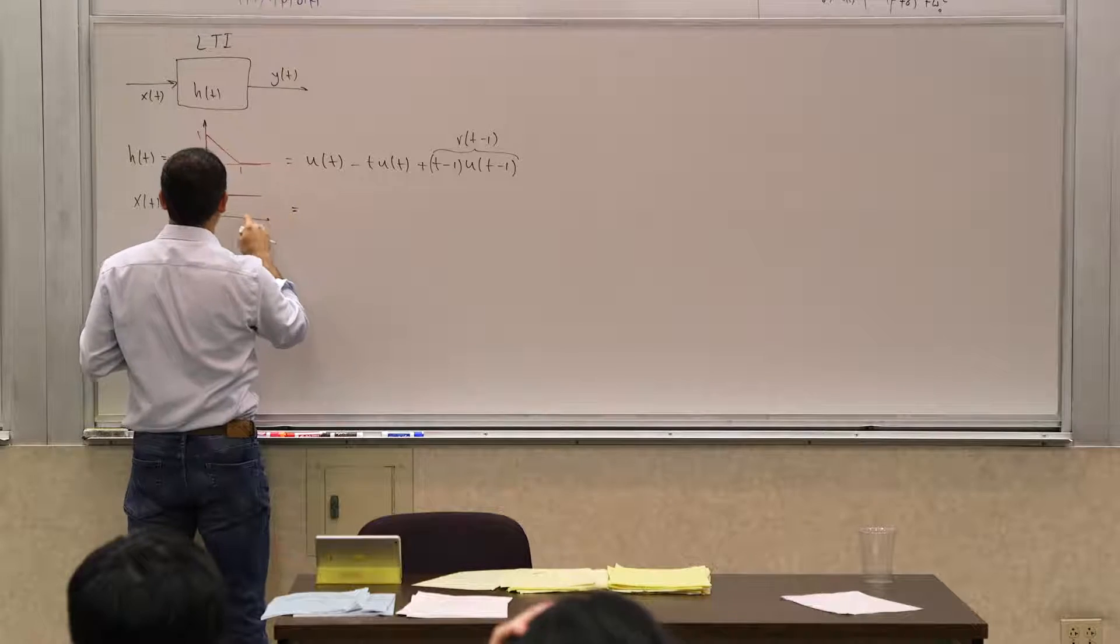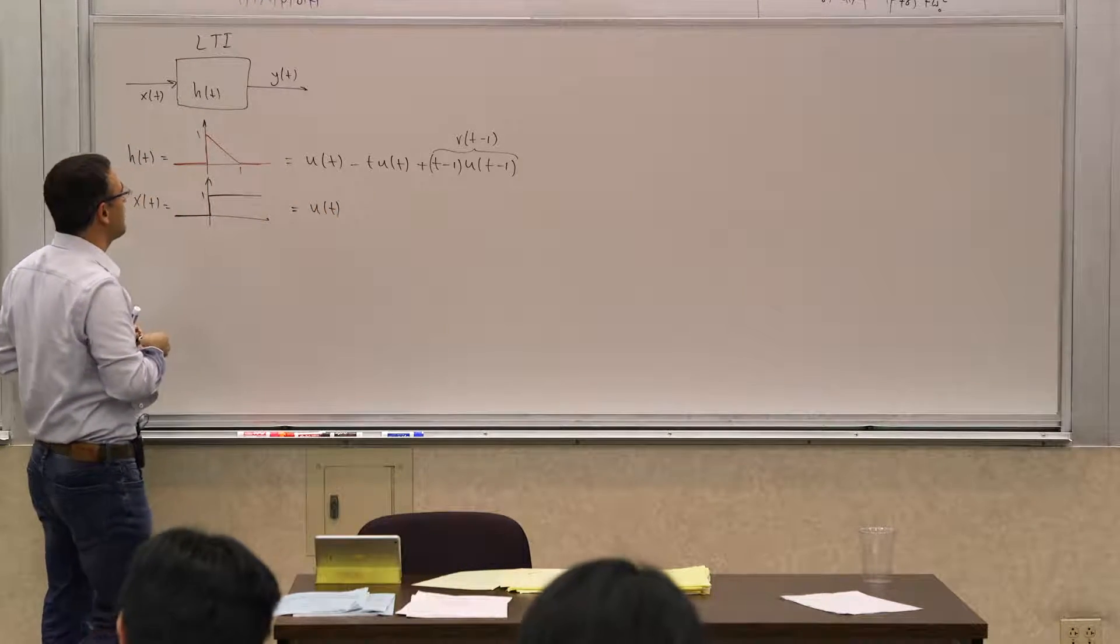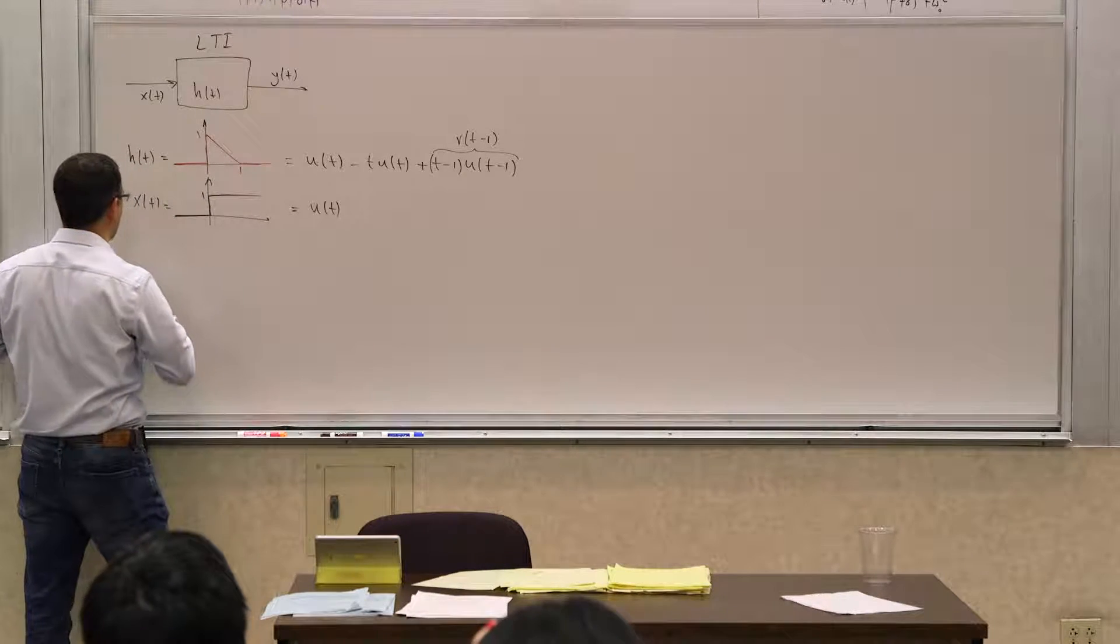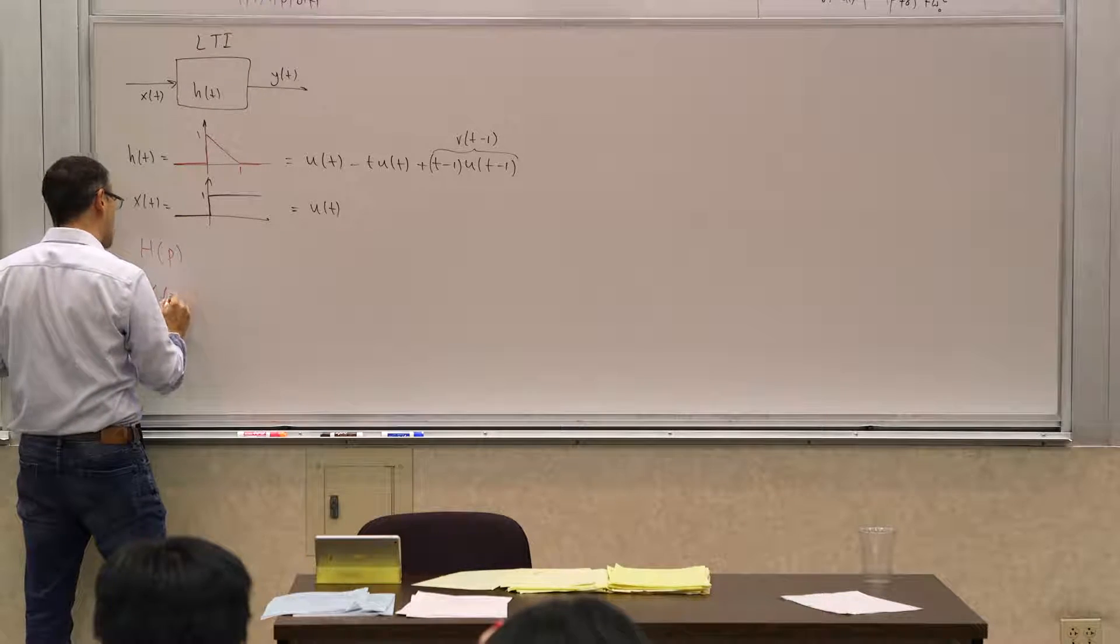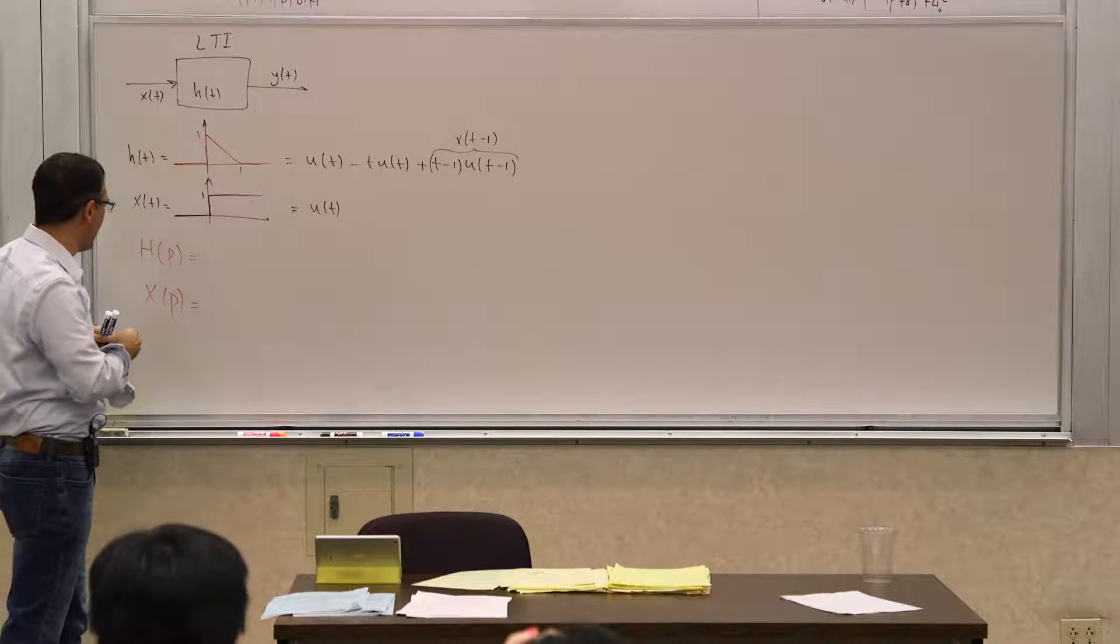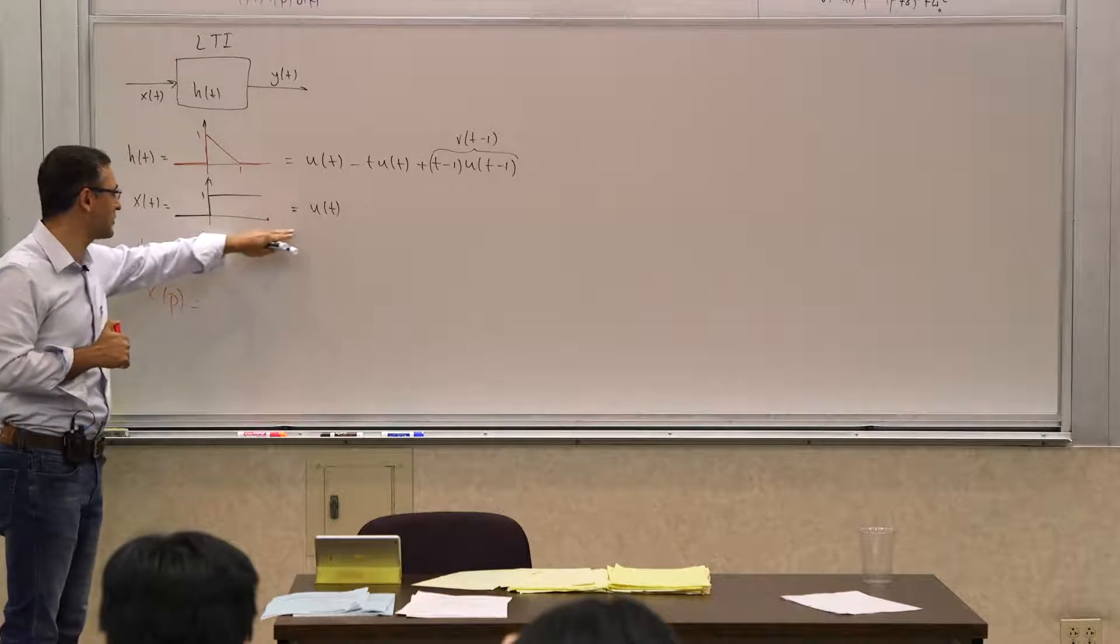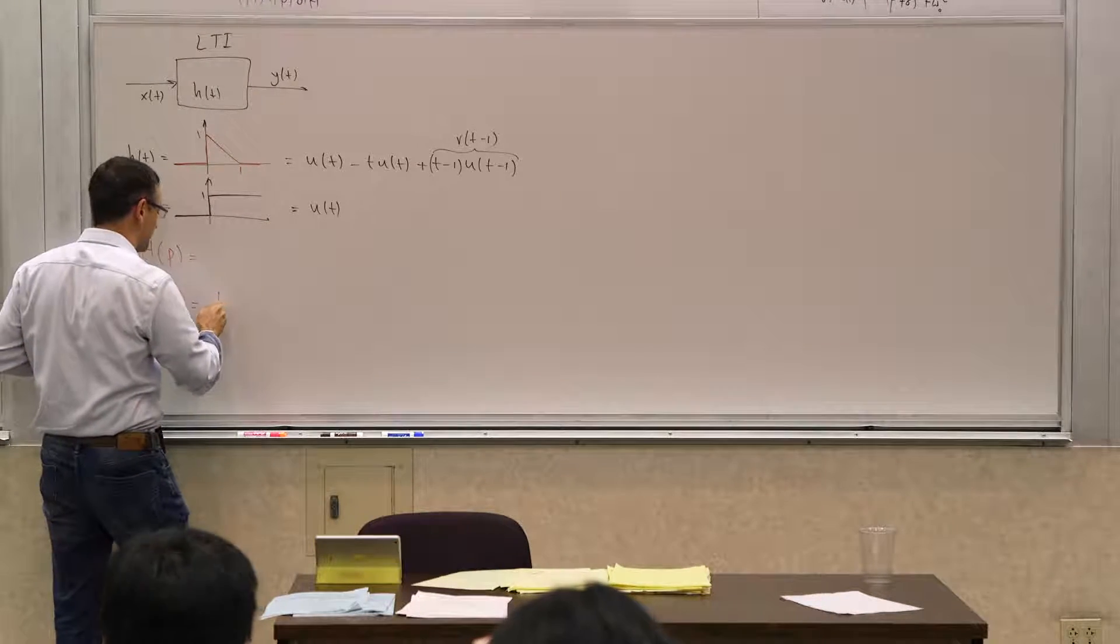The other thing that I have here, this one is pretty simple, this is just u of t. So the question is what are the associated operators for this? So if I were to write h of p and x of p to multiply them to get the y of p, what are they? x of p is pretty straightforward, what is x of p? What is the operator that generates u of t off of an impulse? One over p. So that's easy.